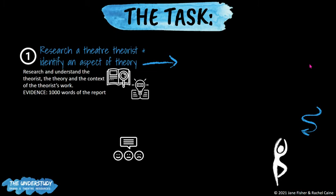For the 3,000-word report, how do we break that up? Firstly, and this is mainly Criterion A, you'll need to research a theatre theorist and identify one aspect of that theorist's theory. Part A asks you to research and understand who the theorist is, what their theatre theory is, and the context behind who the theorist is, where they've come from, and what they've developed and contributed to theatre. This will amount to around about a thousand words of the report. So the first part is very much about your research.